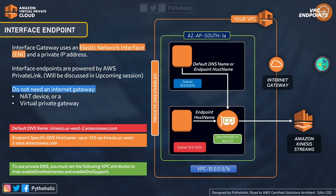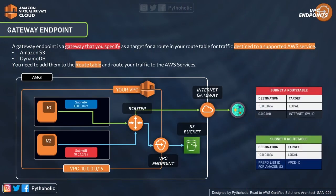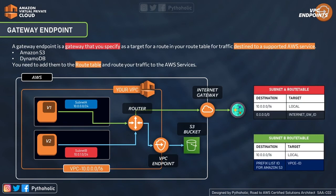To enable private DNS, you must set two VPC attributes to true: 'Enable DNS Hostnames' and 'Enable DNS Support.' This allows you to use DNS names instead of private IP addresses. Now let's talk about the second type: gateway endpoints.